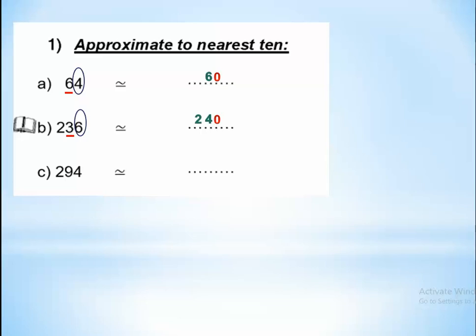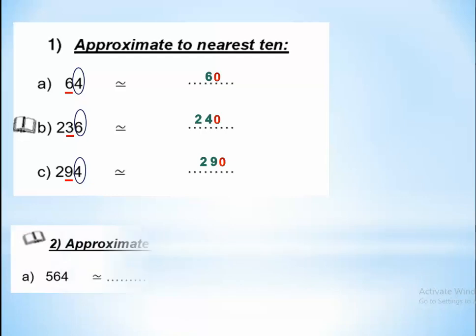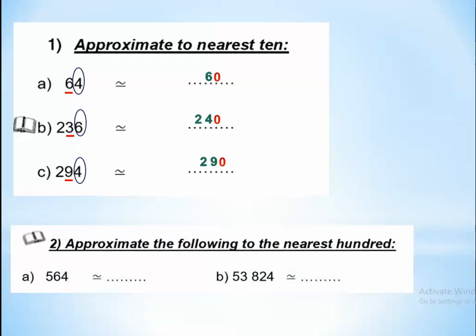For 294: underline the tens place, which is 9. Circle the next-door digit — it is 4 or less. So keep 9 as it is, giving 290. Now approximate the following numbers to the nearest hundred using the same rule: underline the hundreds place, circle the next-door digit. If it's more than 5, add one — so it becomes 6.